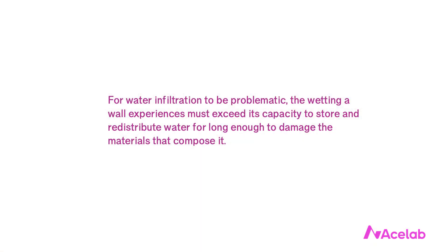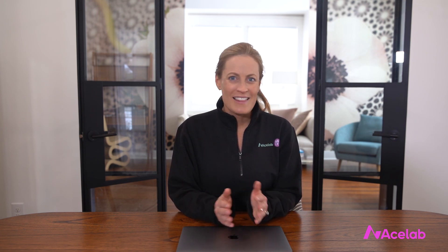This leads to the most important part: when we design walls, we are not engaged in waterproofing — we're engaged in water management. For water infiltration to be problematic, the wetting a wall experiences must exceed its capacity to store and redistribute water for long enough to damage the materials that compose it. Mass walls work because their capacity for safe storage is so high. Perfect barrier walls work because we essentially eliminate wetting. And drained walls work by walking that tightrope between wetting, drying, and safe storage. Even the moisture-sensitive parts behind the WRB will get wet routinely, but not enough for long enough to cause damage. That wetting is not a failure — it's actually a feature. It's how we've designed the system to work.